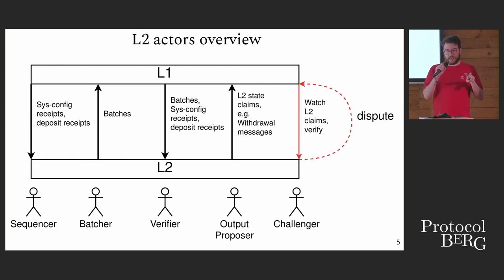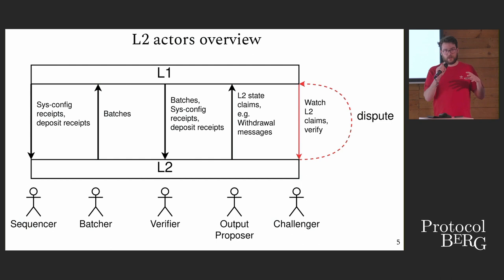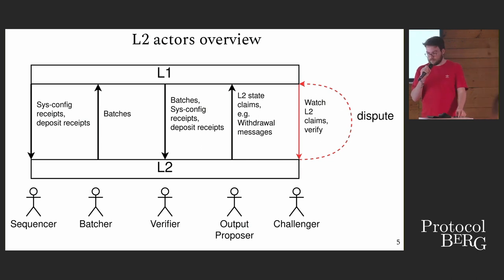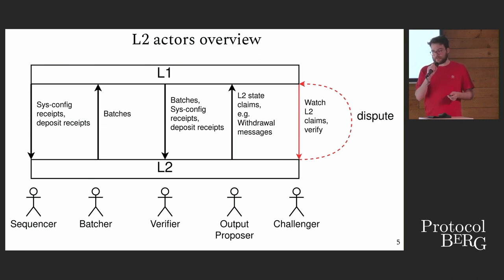The nice thing about the output proposer and challenger is that you can generalize them a lot. The output proposer can be any type of claiming system about the layer two — it doesn't just have to be a state root, it can be any type of property. The challenger can become an open permissionless system where anybody can play this interactive game to gain rewards for disproving dishonest claims. These last two actors are the ones actively changing in layer two; the other actors are already highly optimized. Since rollups already have censorship resistance, you get the most value from first improving these last two actors.